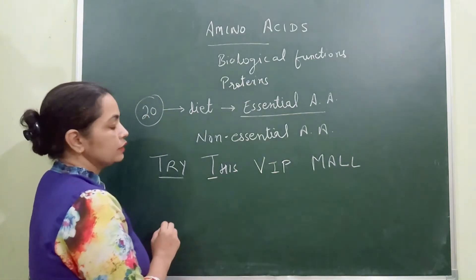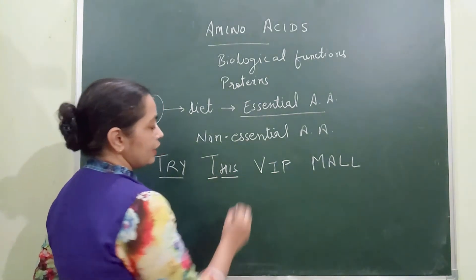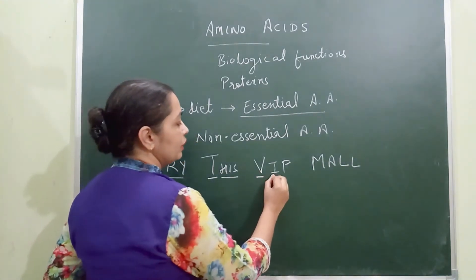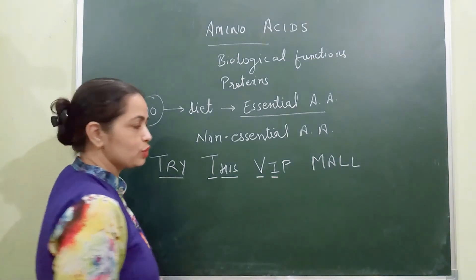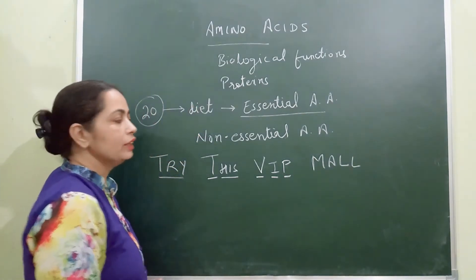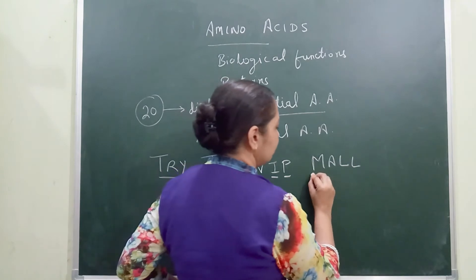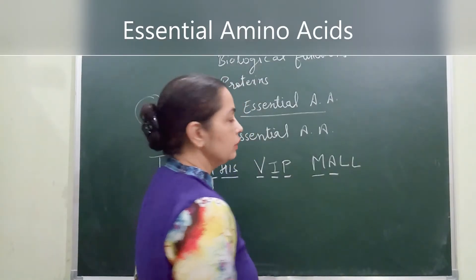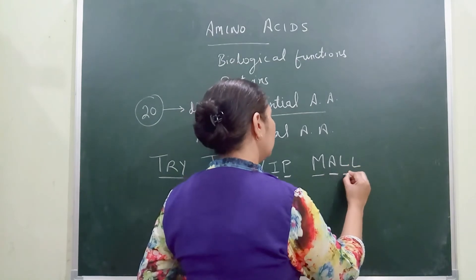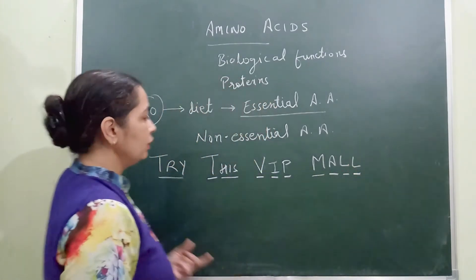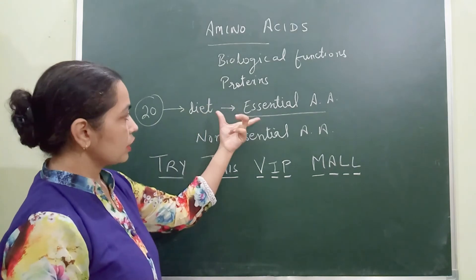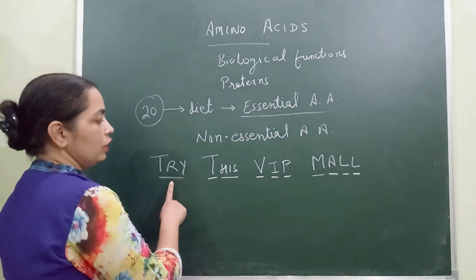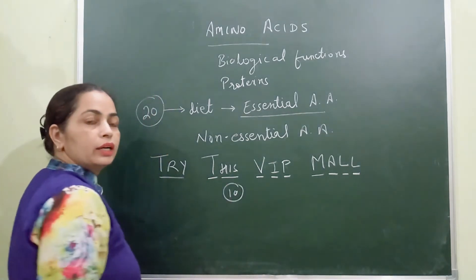TRY stands for tryptophan, the second T stands for threonine, HIS is histidine, V is for valine, I is for isoleucine, P is for phenylalanine, M is for methionine, A is for arginine, and the remaining ones are leucine and lysine.